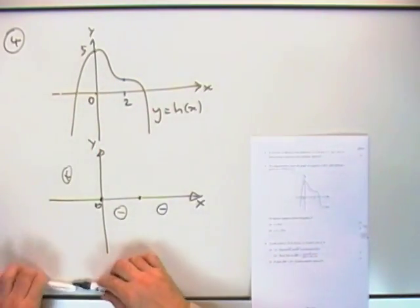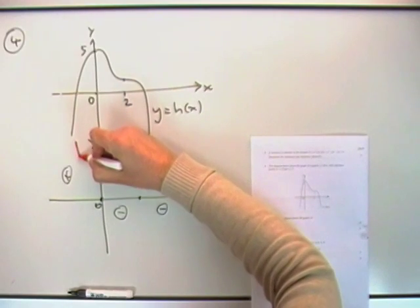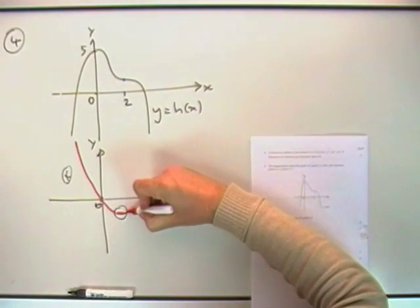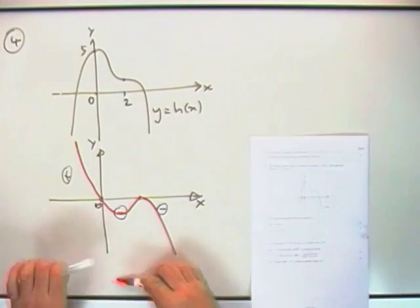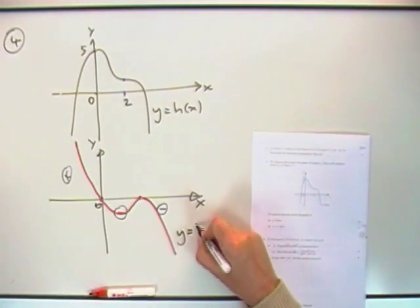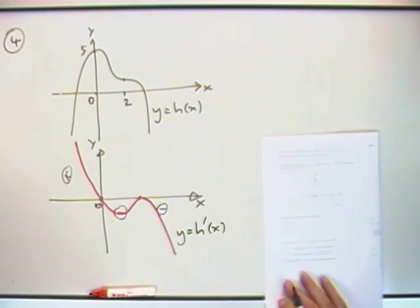The answer to that would just be: it comes down through these positive values to reach 0. It's negative, it's still negative, reaches 0, and then continues negative. That would be the graph. There you are, Y equals H dashed X.